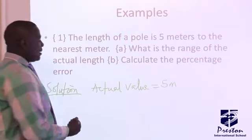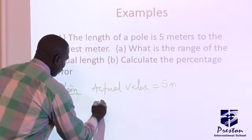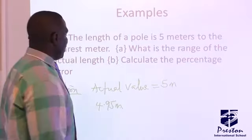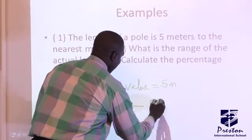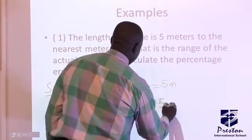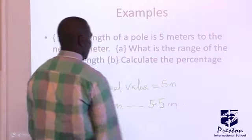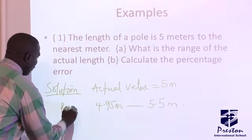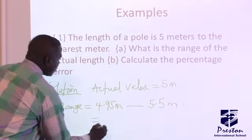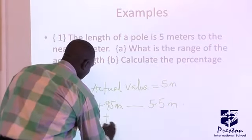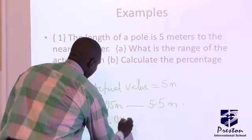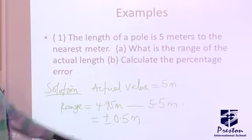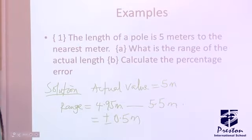...that is 4.95 meters or you measure more than the actual value, 5.5 meters. So therefore, this is the range of what you can have. It is going to be plus or minus 0.5 meters from the actual value. And that would be your error.